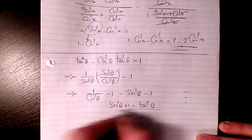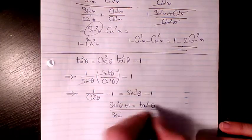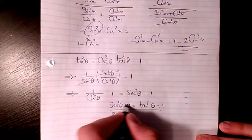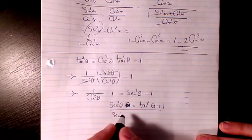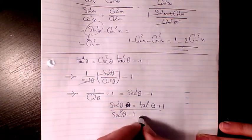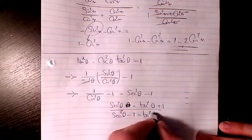So secant, sorry, secant squared theta equals to tan squared theta plus 1. So secant squared theta minus 1 is equal to tan squared theta.